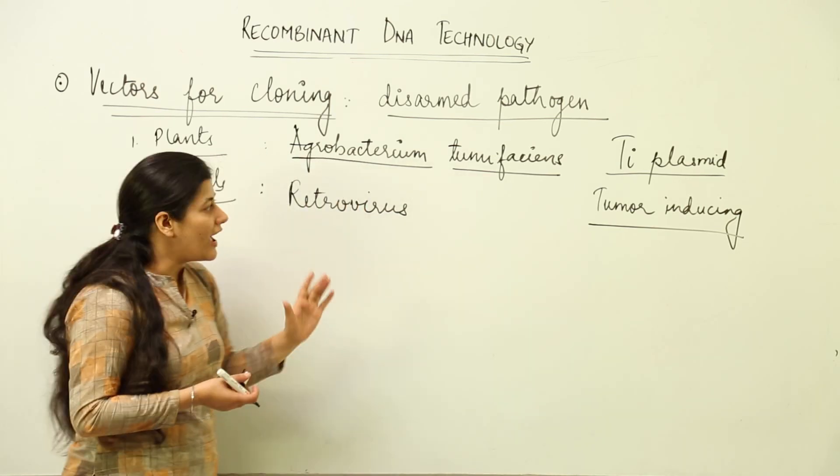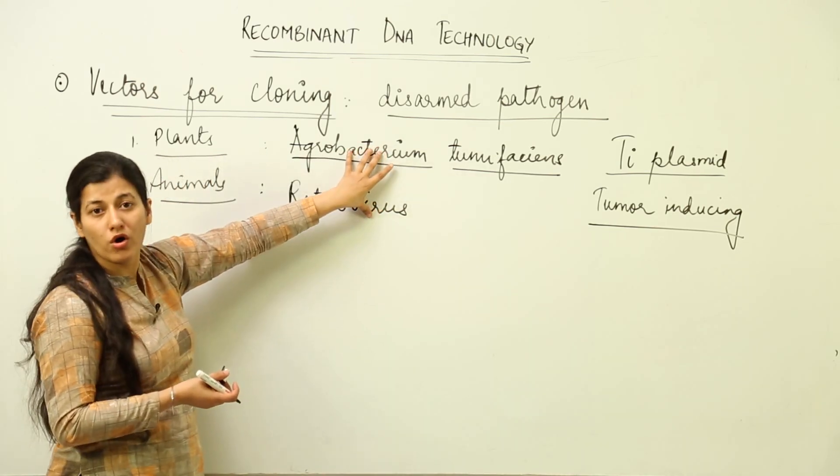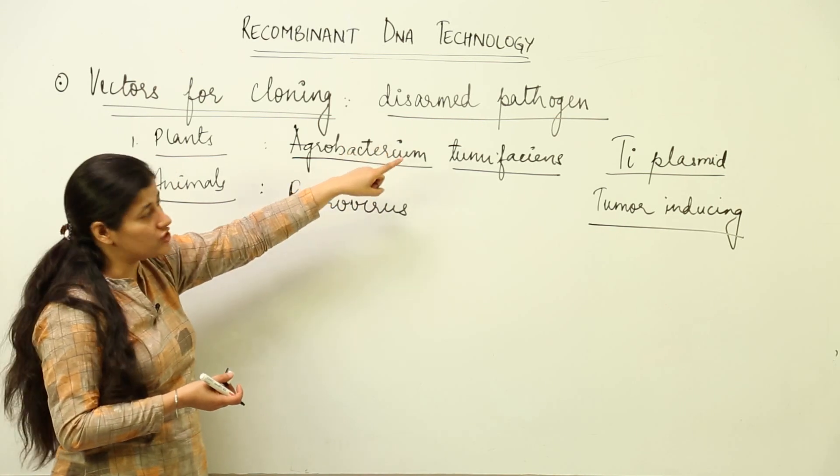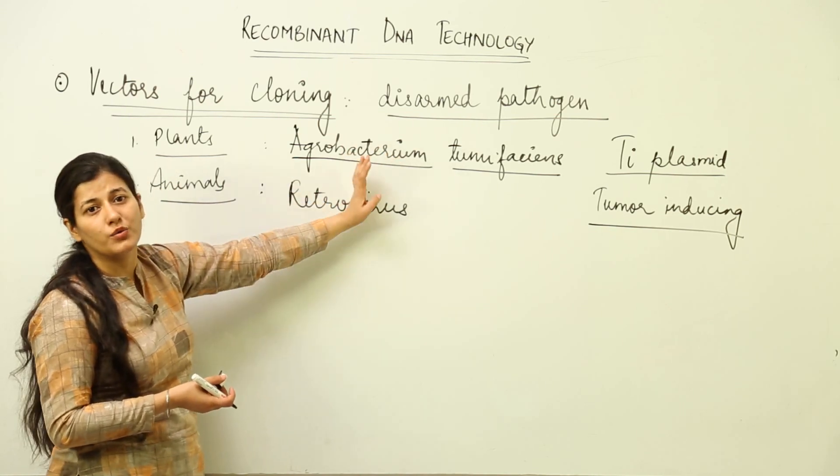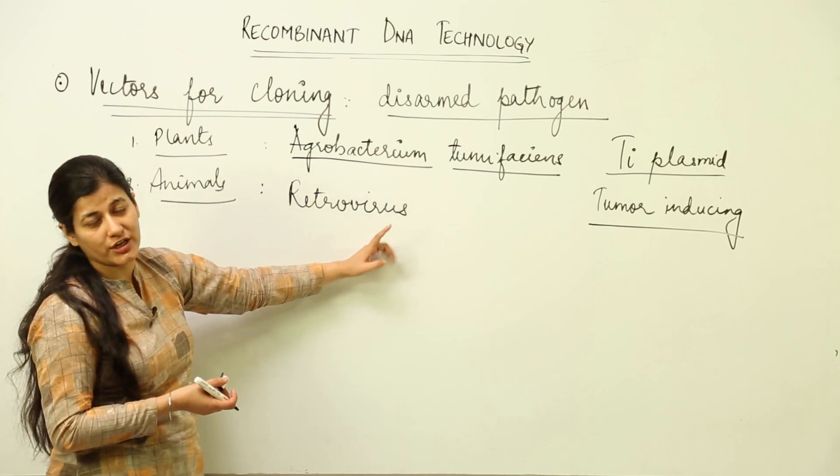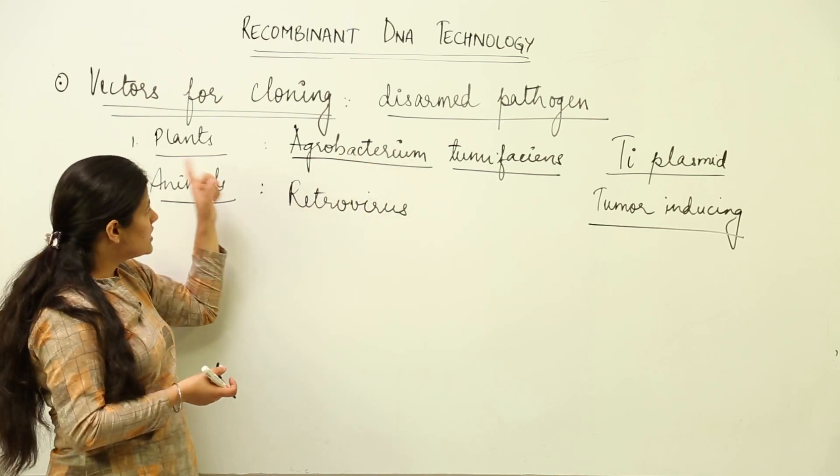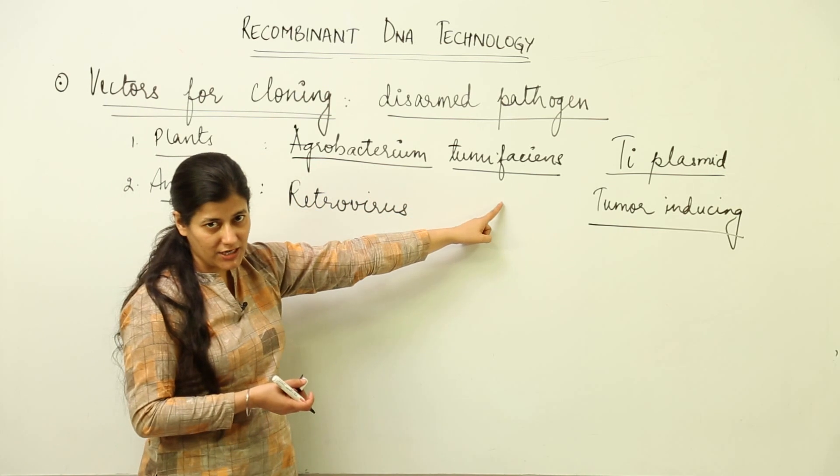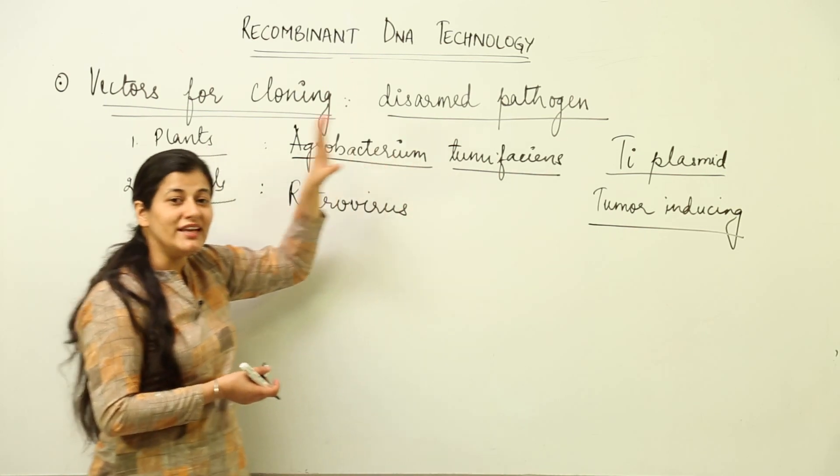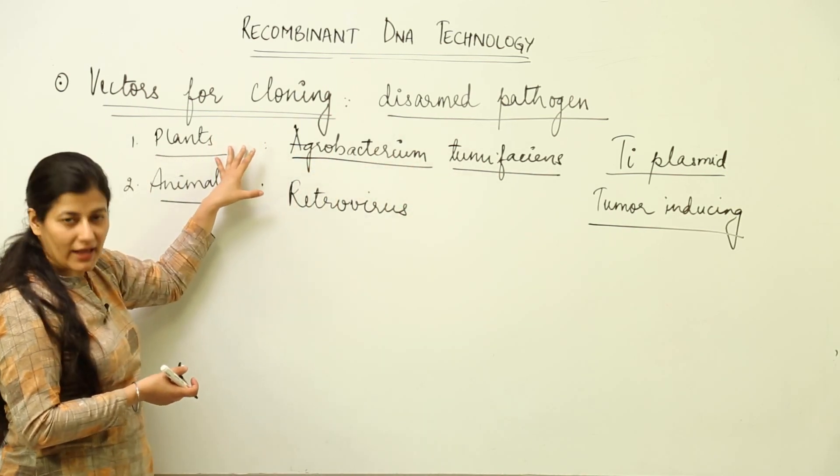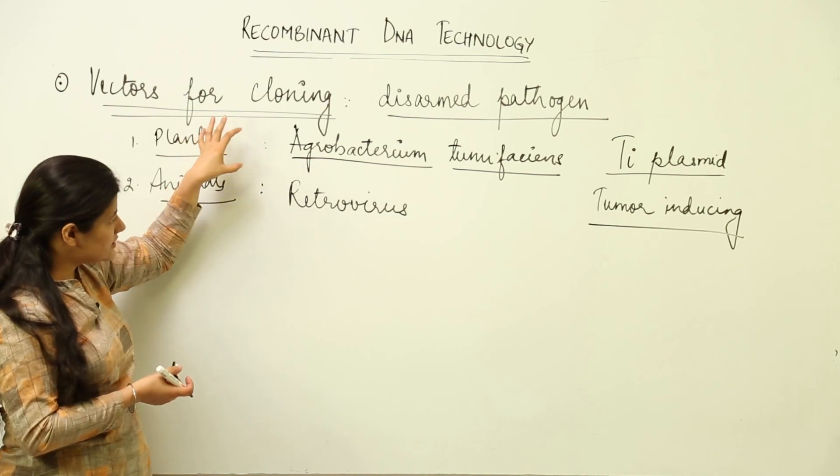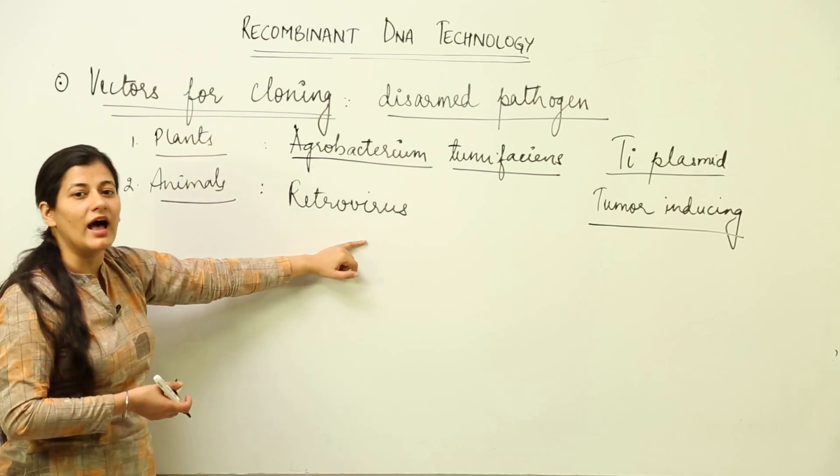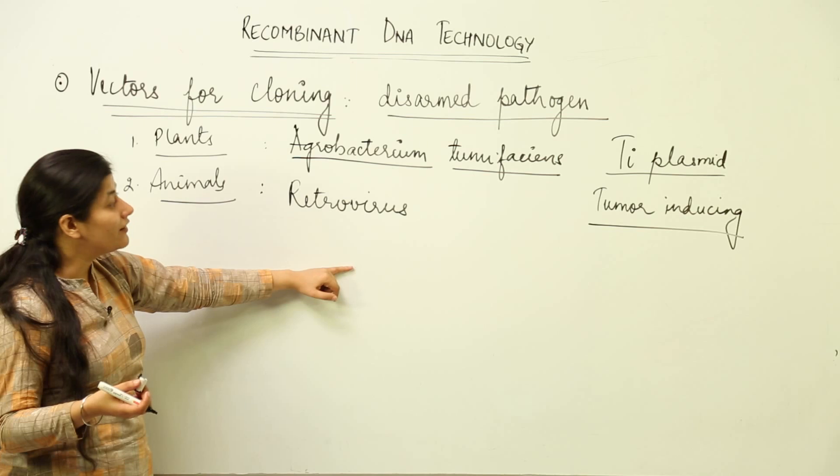So in a way we have made these two organisms which were otherwise pathogenic in nature as our own vectors, and these have a lot of potential in them acting as vectors. This particular bacteria has a lot of potential in plants acting as a cloning vector in plants, and these retroviruses have a huge field and a bright future as I would say to act as cloning vectors in animals.